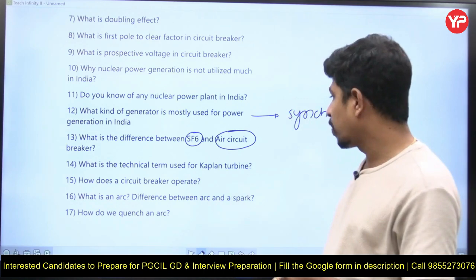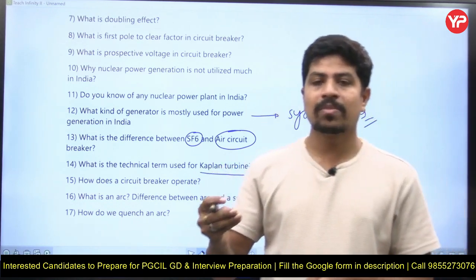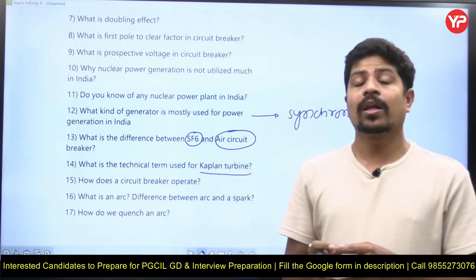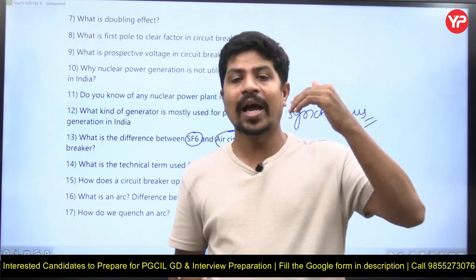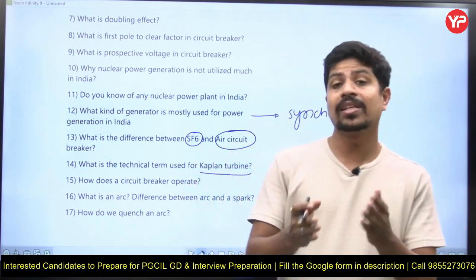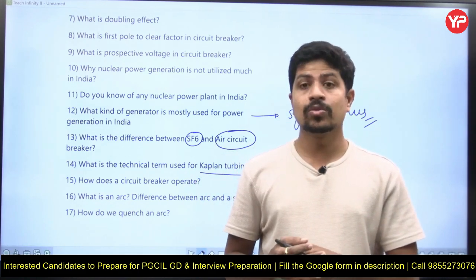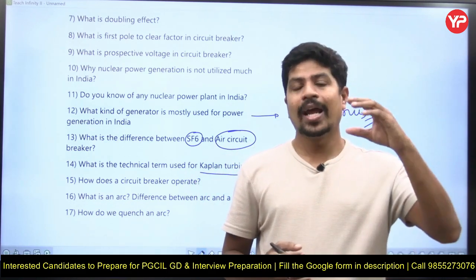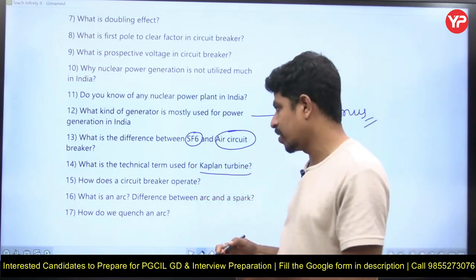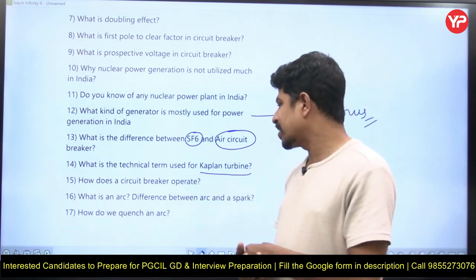What is the technical term used for Kaplan turbine? There are different turbines — impulse turbines and reaction turbines. In thermal generating stations and hydel generating stations, different types of turbines are used. Depending on the head, there is a classification of turbines — having knowledge of those things is important.